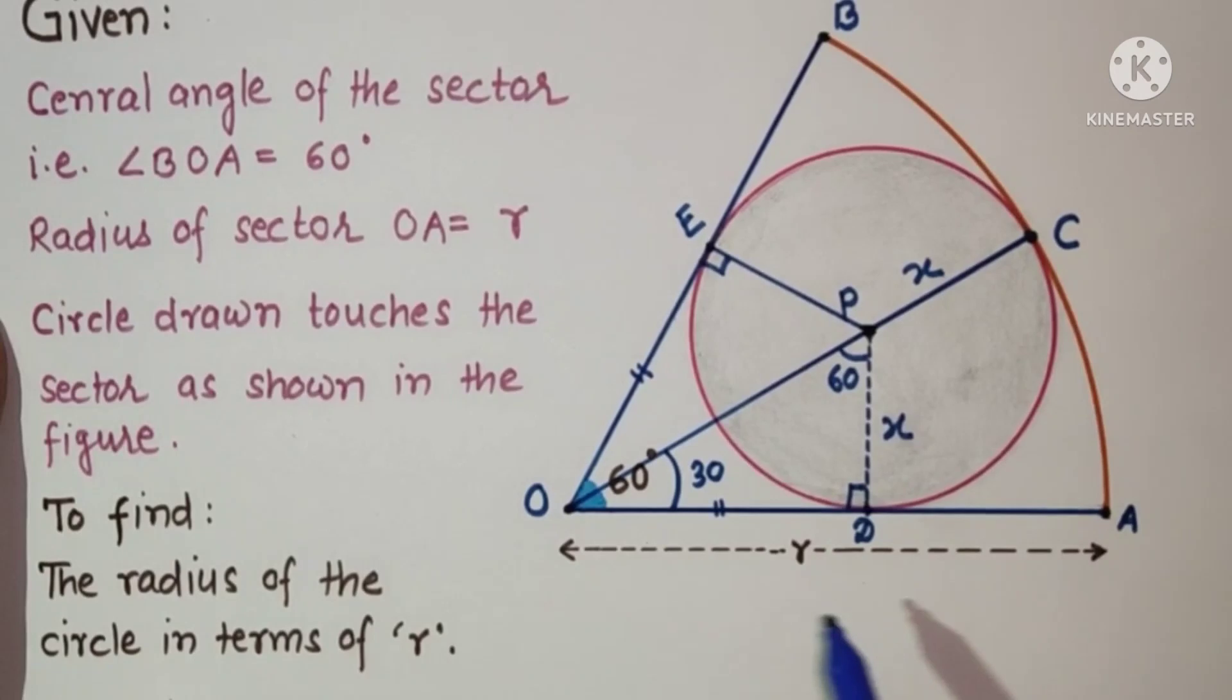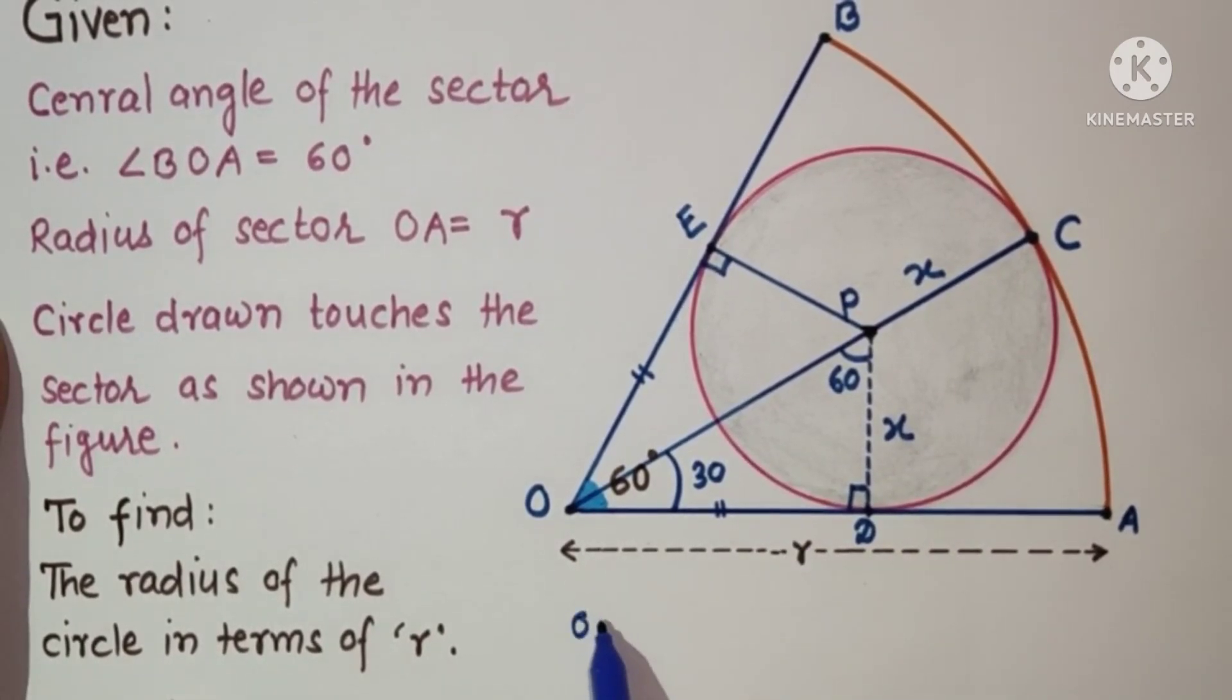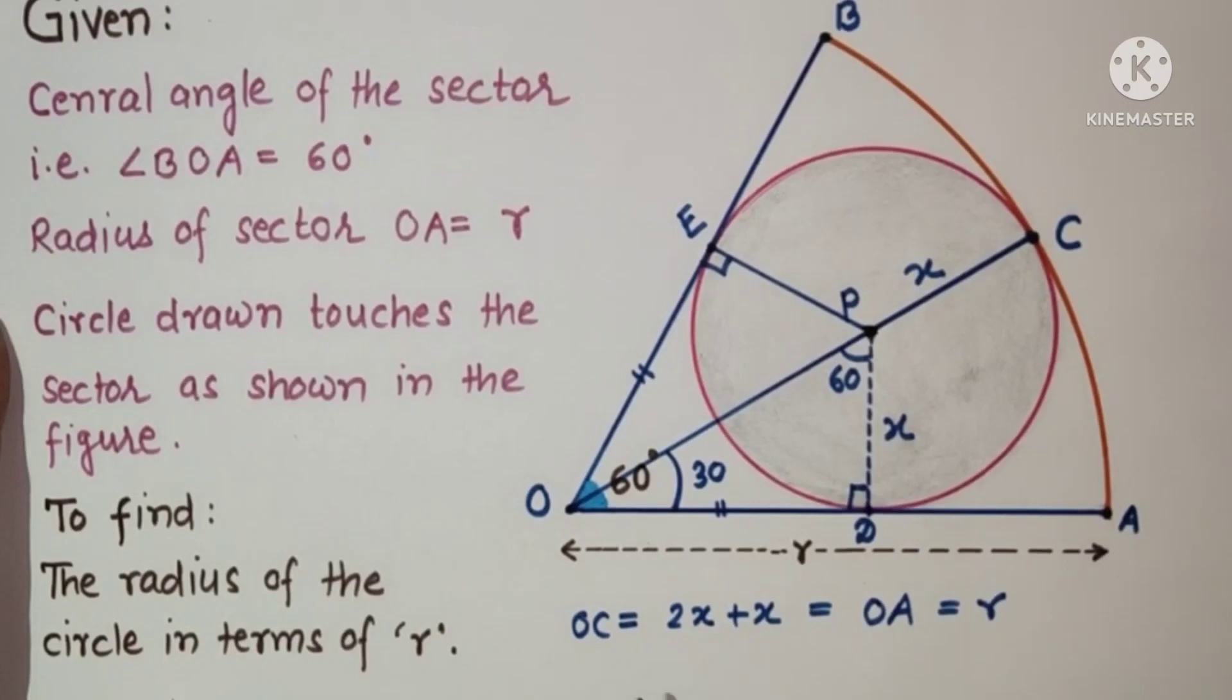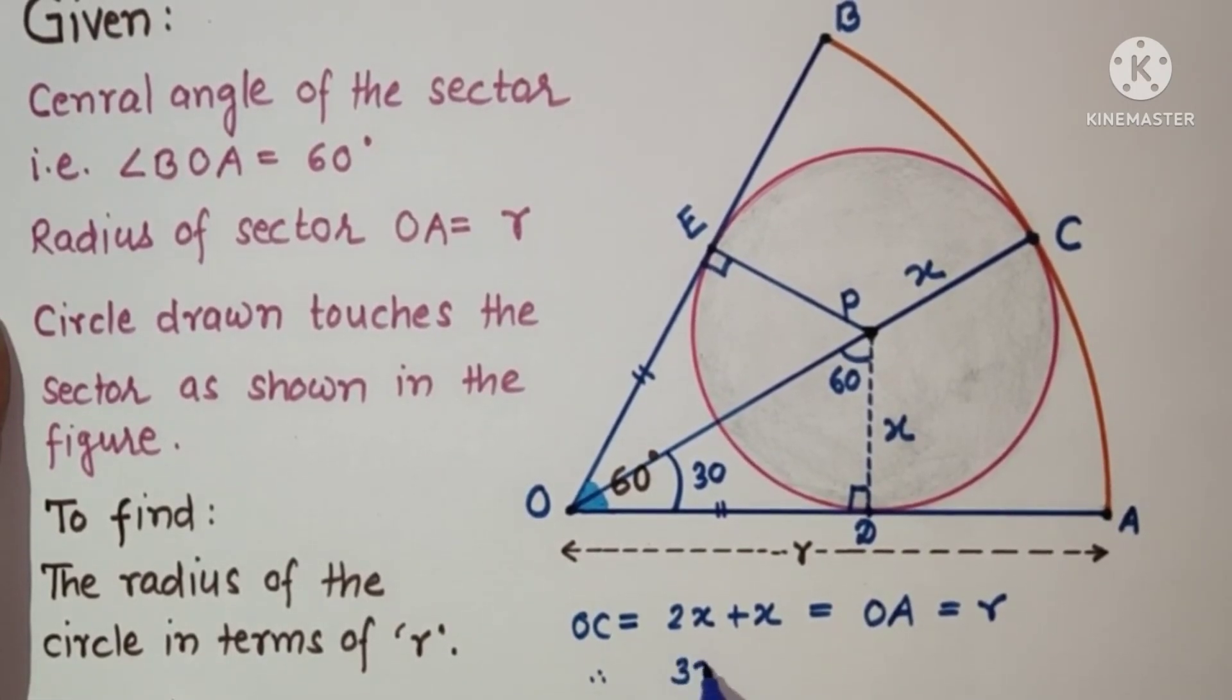But OC is nothing but OA, which is R. So 3X is R, and therefore X is equal to R by 3.